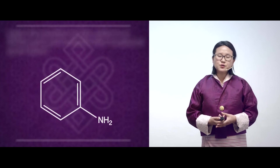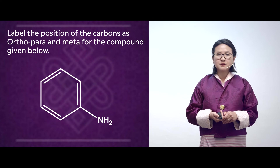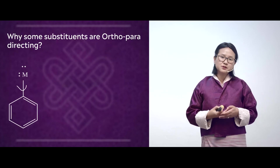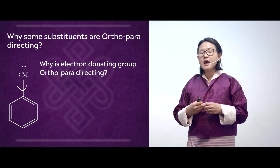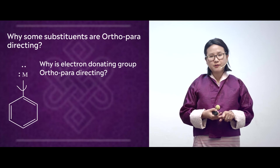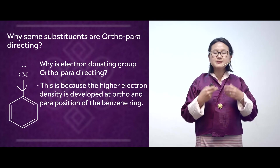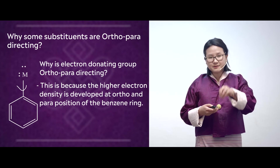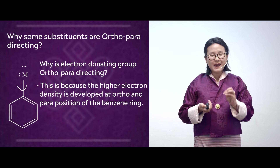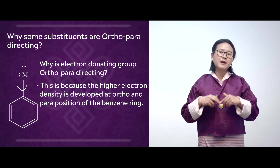Now let's understand why some substituents are ortho/para directing. When an electron-donating group is attached to the aromatic compound, it pushes electrons towards the benzene ring, increasing electron density at ortho and para positions. That is why the incoming electrophile is placed at ortho and para positions.